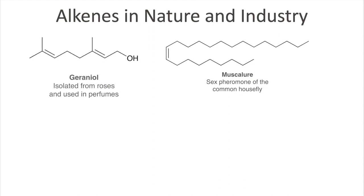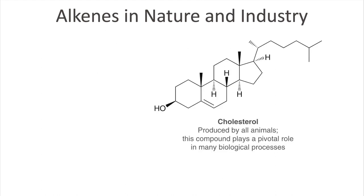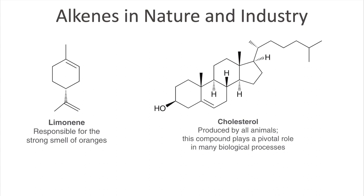Before we go into the chemistry, let's take a step back and look at where you can find alkenes in nature. This functional group is found in various molecules ranging from a molecule in roses responsible for its fragrance, to being part of the sex pheromone of the common housefly, to being found in cholesterol. Alkenes can also be found in rings, like in the molecule limonene — the smell of oranges — where the alkene is within a six-membered ring.